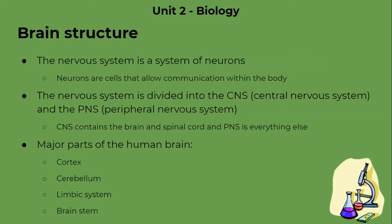Part of the CNS is the main structure: the brain. The parts of the brain are the cortex, cerebellum, limbic system, and brain stem. We're going to go into specifics with these soon.